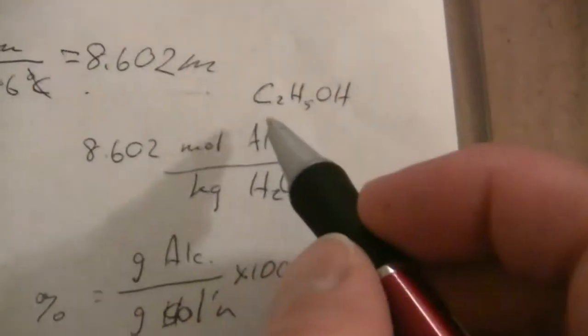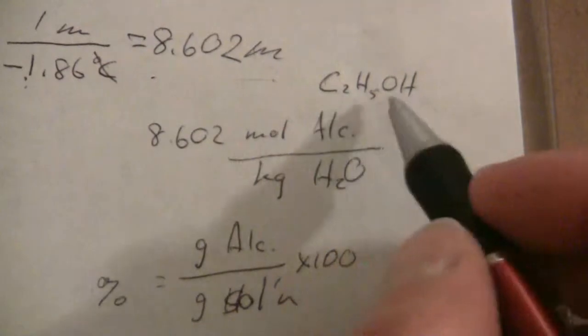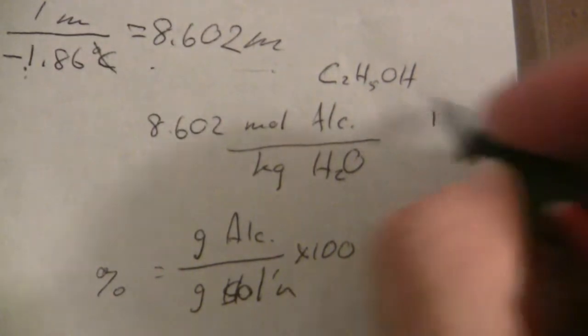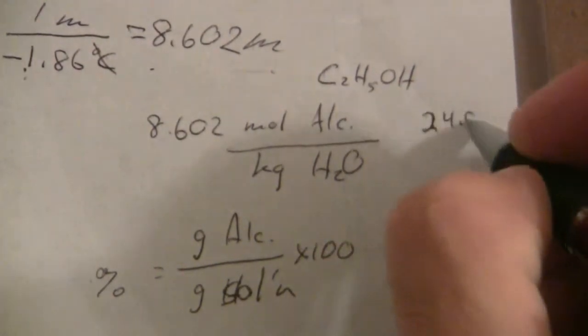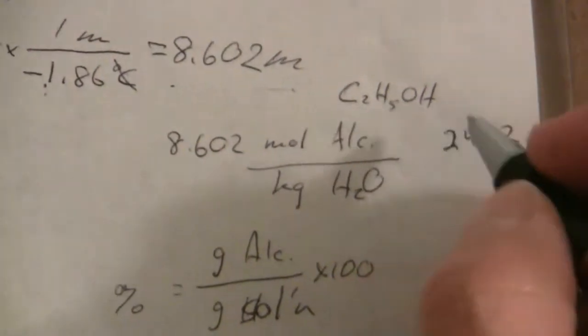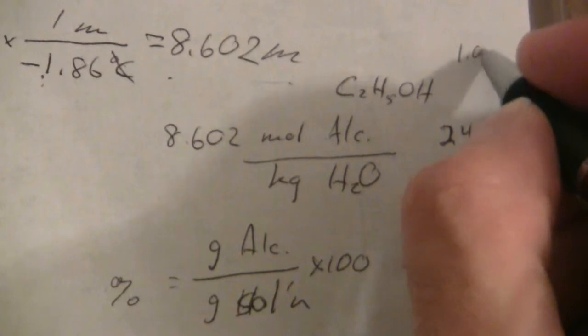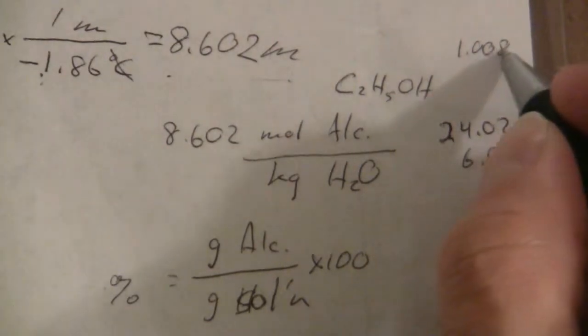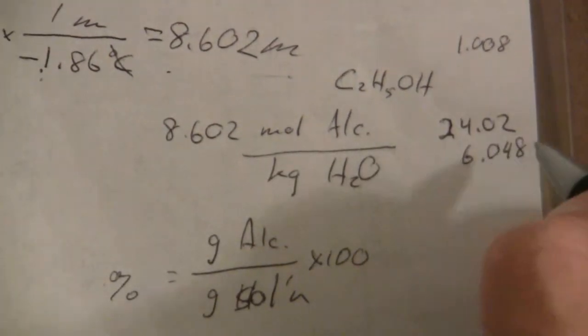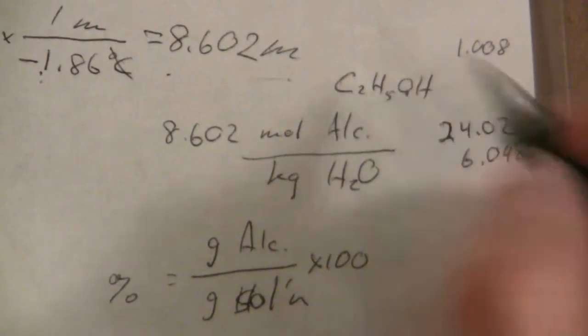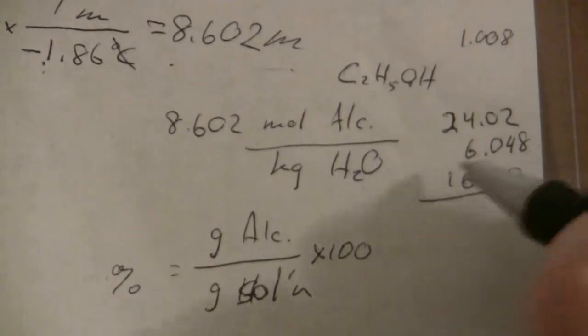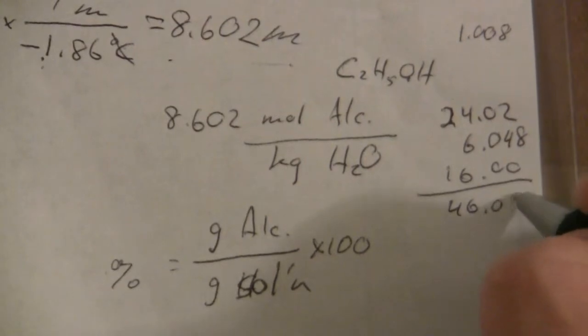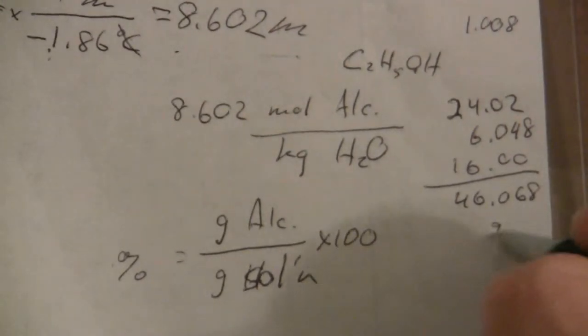Alright, so first of all I'm going to need the molar mass of the alcohol, which is going to be I have 2 times 12.01, which is going to be 24.02, and then 6 times 1.008, and that's going to be 6.049. And then 16.00 for the oxygen, and I have 46.068 grams per mole.